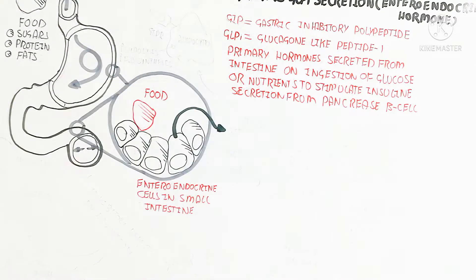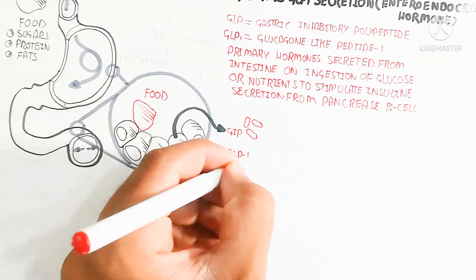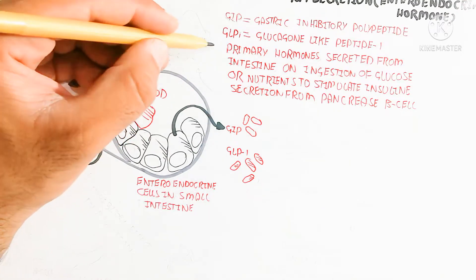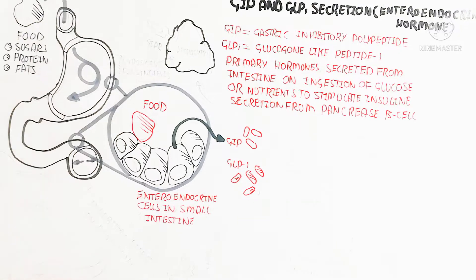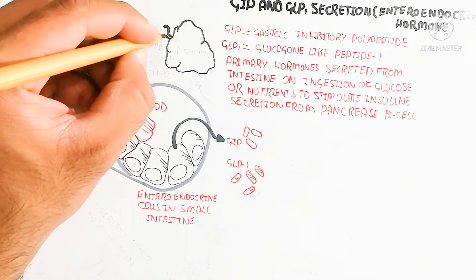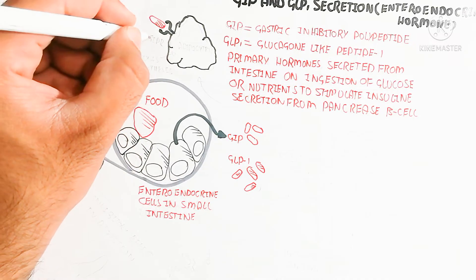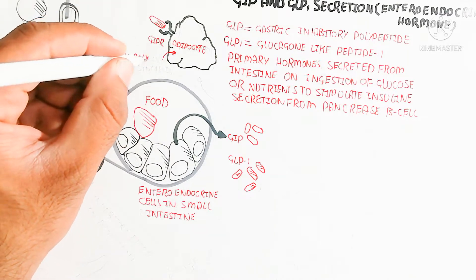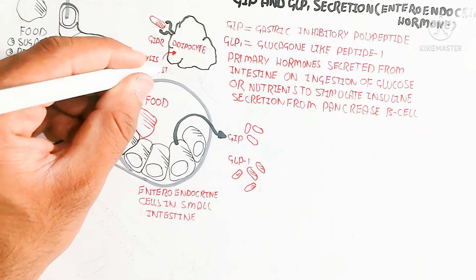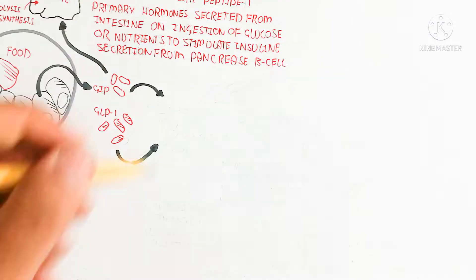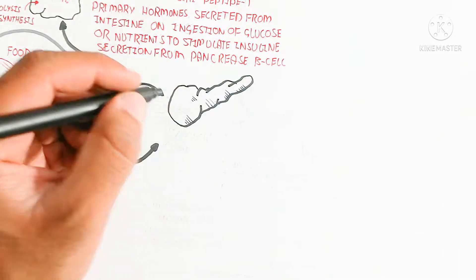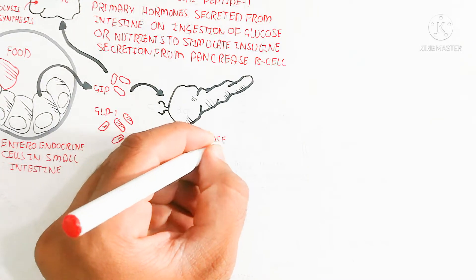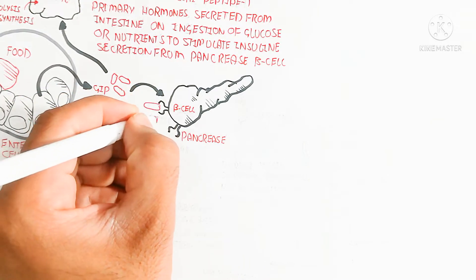GIP acts in another way as well — it inhibits gastric activity, decreases appetite, and targets adipose tissue for the uptake of lipids and fats through lipolysis and free fatty acid synthesis. This happens because food is already present in the gastrointestinal tract, so we do not need to reserve additional energy stores — instead, we uptake already stored food, as the food in the GI tract will be used as a resource in the next phase.